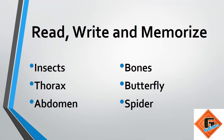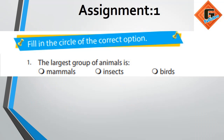First, in today's lecture, this assignment is very simple. You need to use the book and fill in the circle of the correct option. Three options are given to you and you must choose the right one.